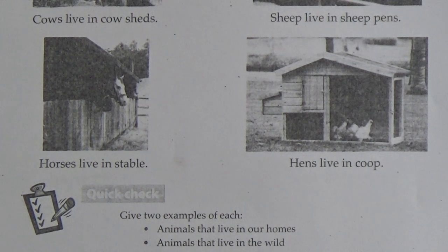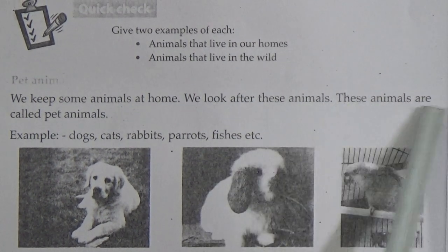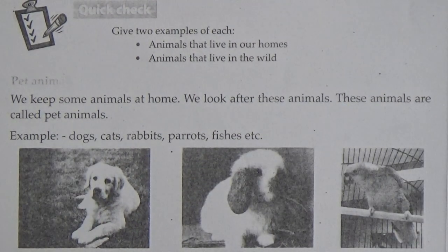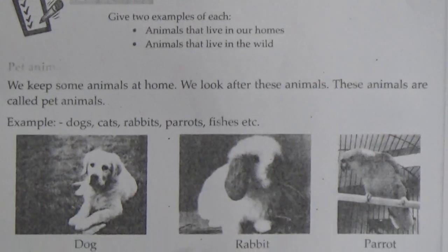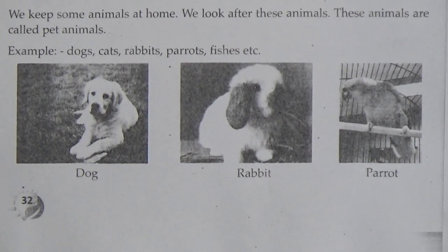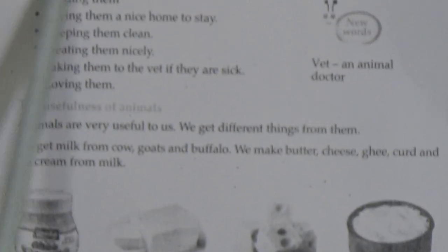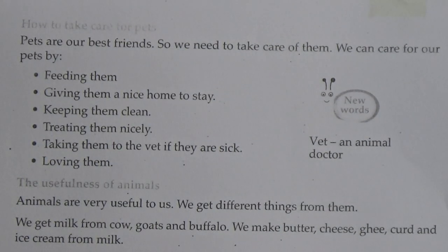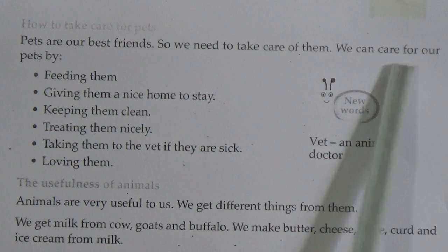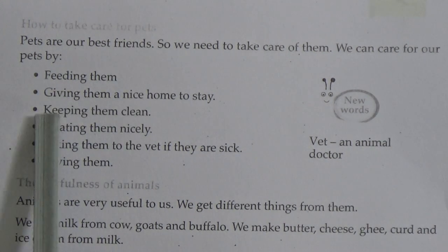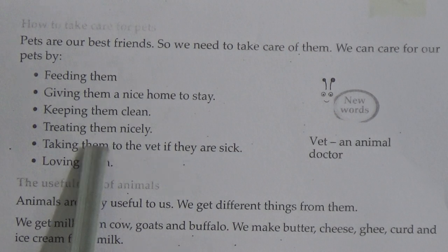Next is pet animals. We keep some animals at home and look after them — these animals are called pet animals. Examples: dog, cat, rabbit, parrots, fishes, etc. This is page number 33. Here it is written how to take care of pets. Pets are our best friends, so we need to take care of them. We can care for our pets by feeding them, giving them a nice home to stay, and keeping them clean.